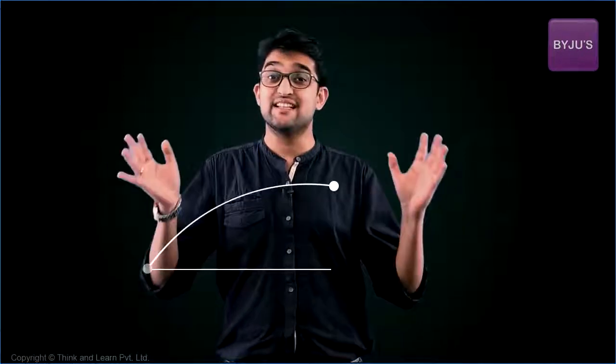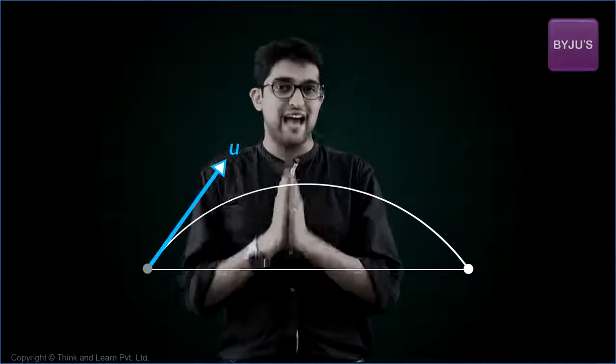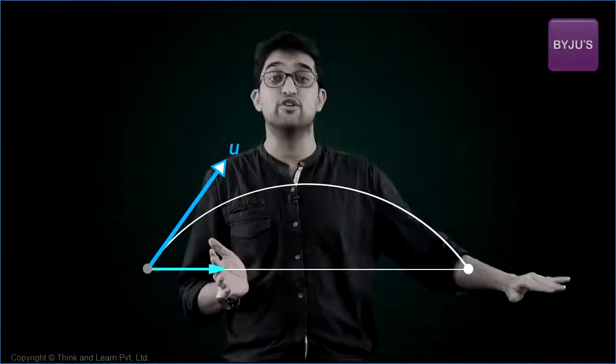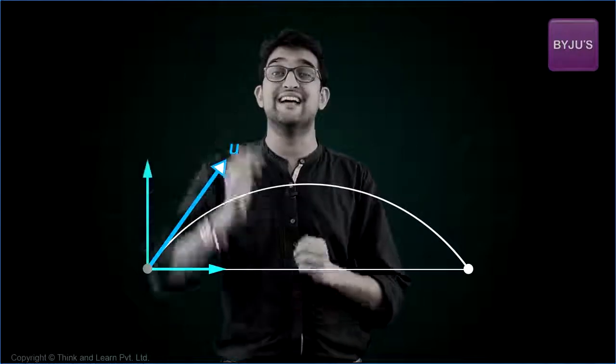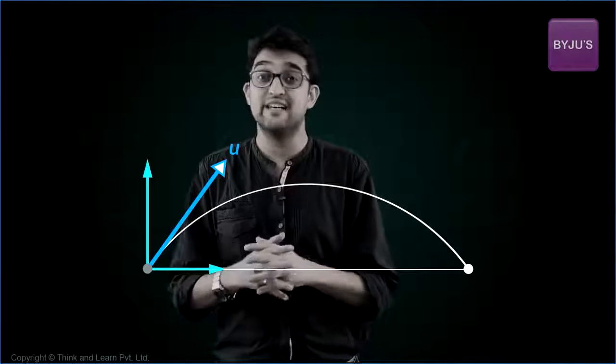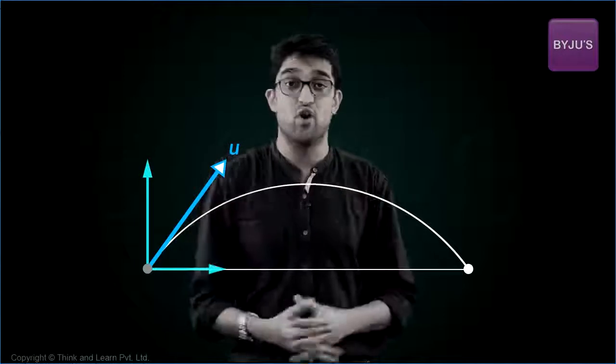For instance, let's take this standard projectile. This projectile with a 2D motion is actually combination of two 1D motions. One-dimensional motion along the horizontal direction and another one-dimensional motion along the vertical direction. Once you start seeing things like this, suddenly everything you know about 1D motion becomes applicable in 2D motion also.